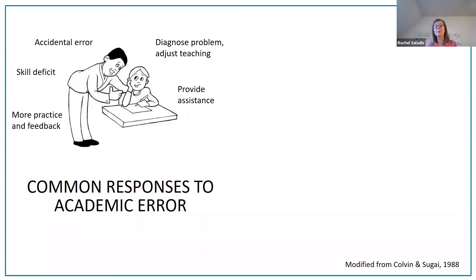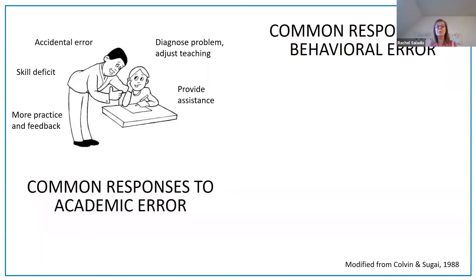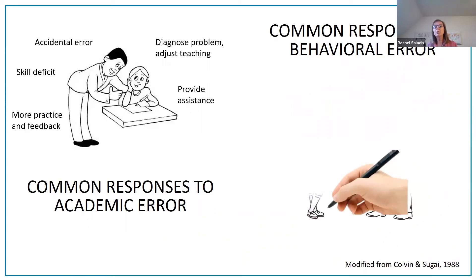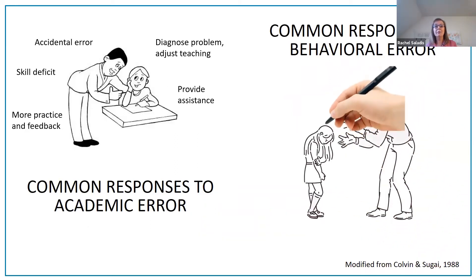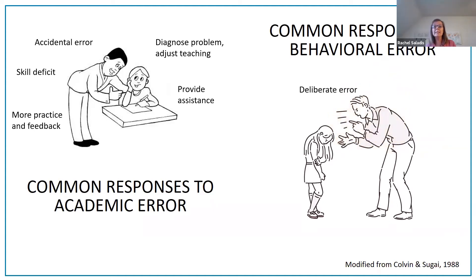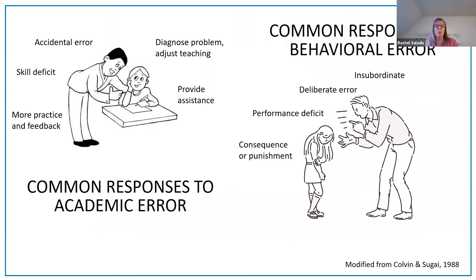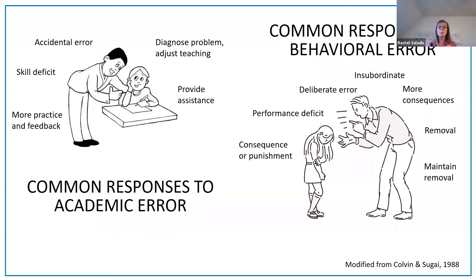Now let's take a look at common responses to behavioral error. According to the research, it is pretty typical that behavioral error triggers an emotional response from adults. Teachers often assume that the error is deliberate or caused by a performance deficit. They respond by issuing a consequence or punishment. And if the error continues, the student is often labeled insubordinate — thought to be choosing to do bad things anyway — and issued additional consequences up to and including removal from their small group, recess, lunch, the classroom, or even the school.